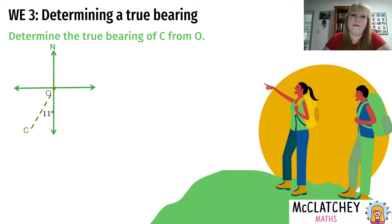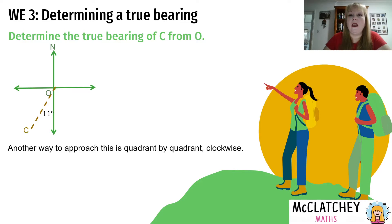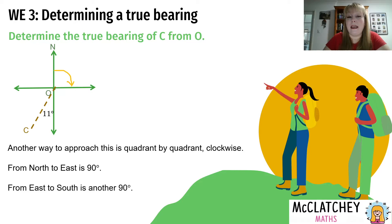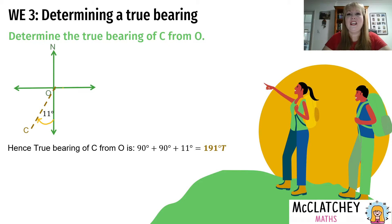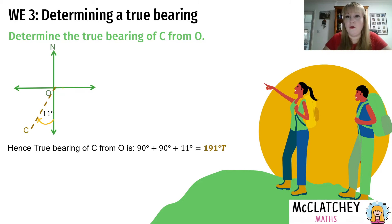In the next worked example we find the bearing of C from point O, looking at it quadrant by quadrant clockwise. From north to east is 90 degrees, from east to south another 90 degrees, and then the remaining part to C is 11 degrees. So 90 plus 90 plus 11 gives 191 degrees true. Alternatively, recognizing that north to south is 180 degrees, you start with 180 and add 11. You can use addition or subtraction — just make sure you start at north and work clockwise to your point.